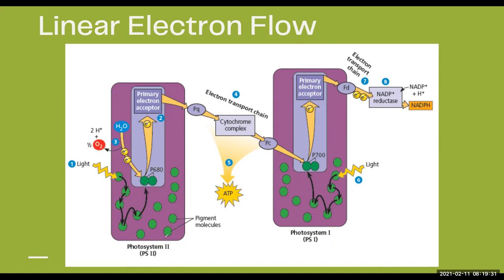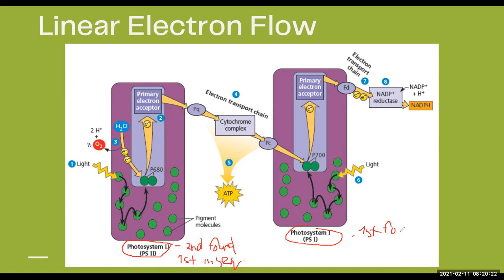Photosystem 2 — or PS2 — is a bit confusing but don't be confused: PS2 is actually the first in the sequence of linear electron flow. It is called PS2 only because it was the second one discovered. Photosystem 1 was the first found. So PS2 is the second found but it is the first in the sequence.